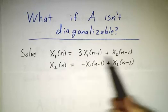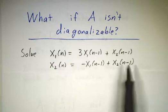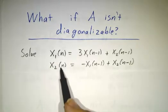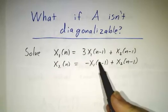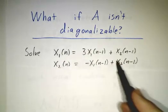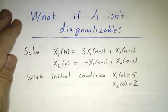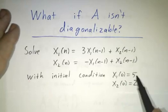So here is our set of equations. x1 and x2 tomorrow are linear functions, sorry, x1 and x2 today are linear functions of x1 and x2 yesterday, and we're going to start with the initial conditions.